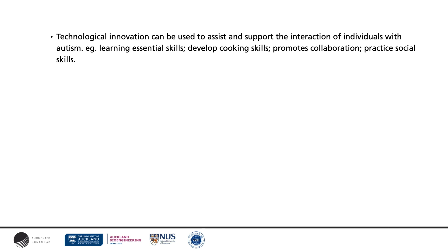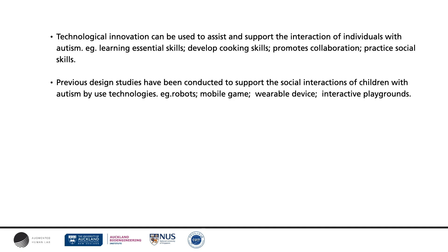For example, technology can help children with autism learn essential skills, develop cooking skills, promote collaboration, and practice social skills. Prior design studies have shown technologies to support the social interaction of children with autism, including robots, mobile games, wearable devices, and interactive playgrounds.